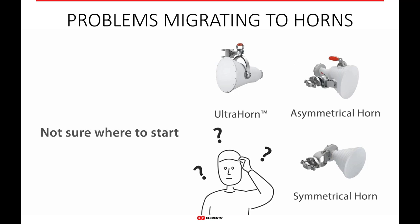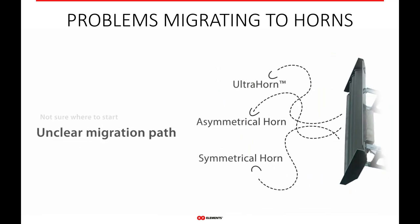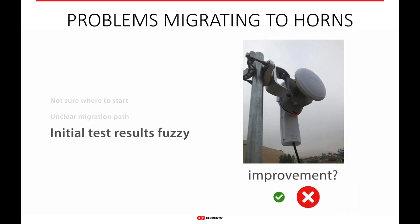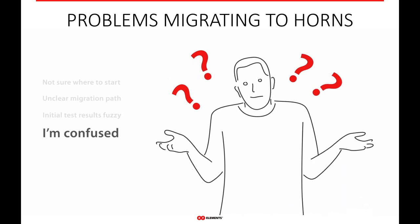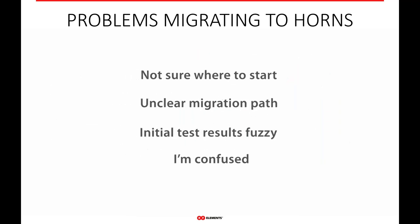Some of the problems when people migrate to horns is they're not sure where to start. Do they use an ultra horn? An asymmetrical horn? A symmetrical horn? The migration path from sector to horns can be unclear, and hopefully this webinar will clarify that. Some of you may have already tested our horns and your initial results are a little fuzzy — it doesn't make sense, you're not seeing what you expect. This confuses some people. We'll go through those issues and the best known practices — feedback from our customers on how to migrate to horns successfully.